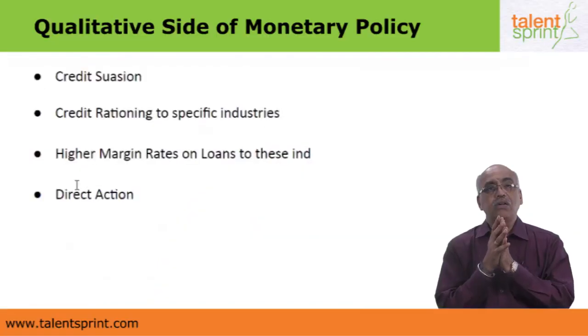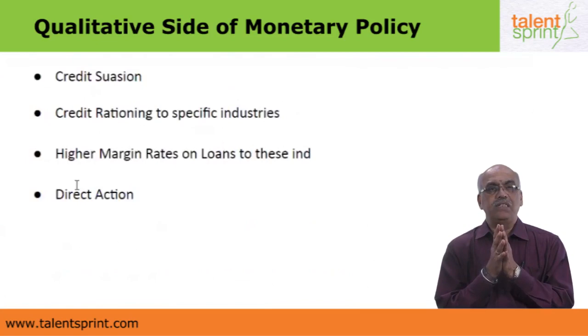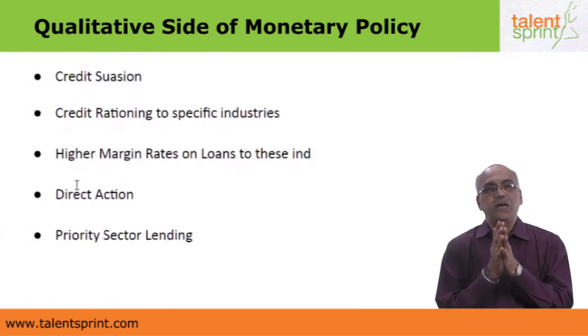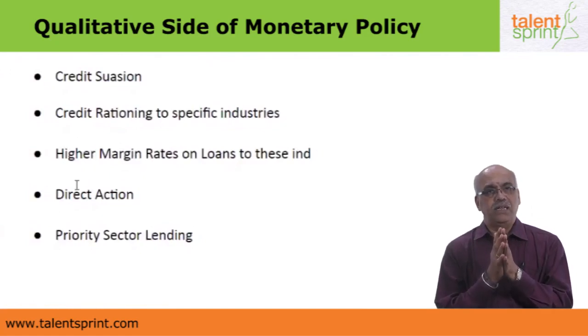RBI can also be involved in direct action — it can intervene directly and say that certain types of industries will not be given credit at all. Instead of merely reducing the amount of money given, it can completely ban loans altogether. This is called direct action. Another qualitative restriction imposed by RBI is called priority sector lending.